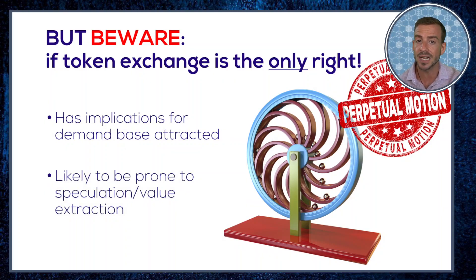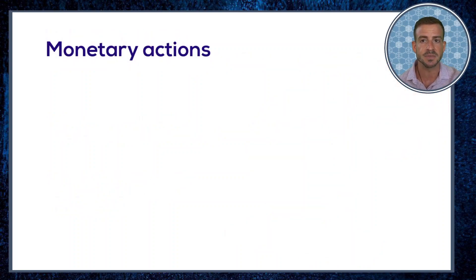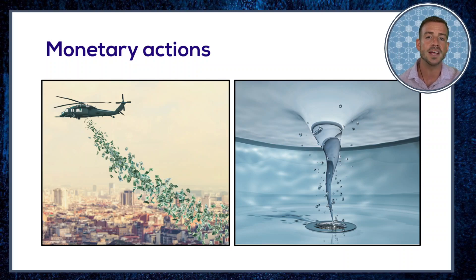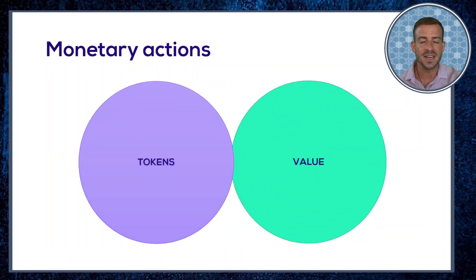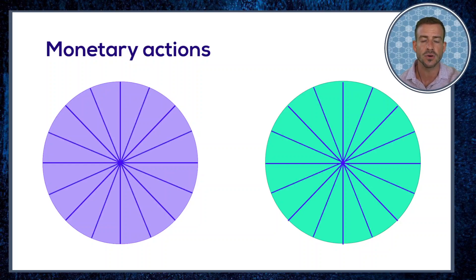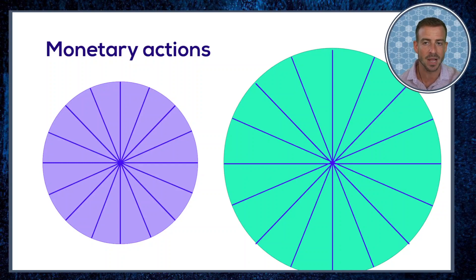That wraps up our discussion of claim rights. The other group of mechanisms for creating value accrual are monetary in nature — actions that change the supply of tokens available at a given time. Well-designed claim rights will probably leave us in one of two situations. In the first case, we have a defined value pool that a number of tokens represent a fractional claim to. If we hold the value pool constant and increase the number of tokens, each token represents a less valuable claim to a smaller fraction of the pool — so fewer tokens makes each more valuable, and more tokens makes them less valuable, unless the value pool grows to match.